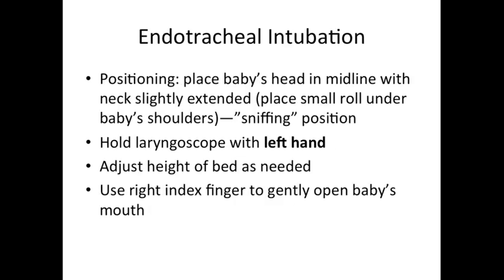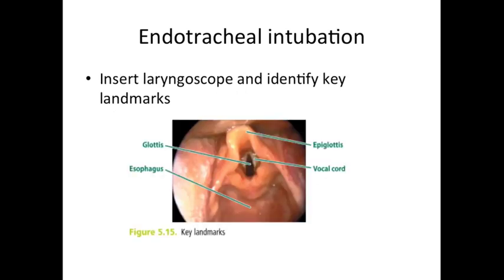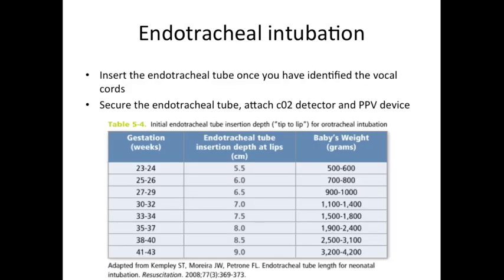Position the baby's head in midline with the neck slightly extended in sniffing position. Always hold the blade with the left hand. Adjust the height of the bed as needed and use the right index finger to gently open the baby's mouth. This picture illustrates the key landmarks to identify when intubating. Once you are able to see the vocal cords, you may pass your ET tube down. Secure the tube and then attach the CO2 detector and PPV device.